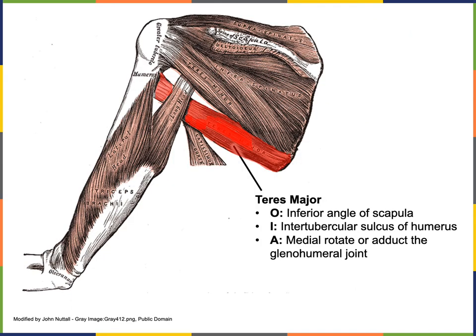The origin of teres major is on the inferior angle of the scapula. The insertion of teres major is on the intertubercular sulcus of the humerus. The action of teres major is to medially rotate or adduct the glenohumeral joint.